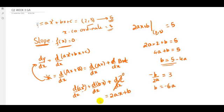Substituting b = −6a into b = 5 − 4a: −6a = 5 − 4a. Bringing −4a to the left side: −6a + 4a = 5, so −2a = 5, giving a = −5/2.